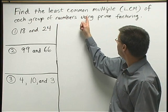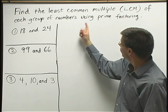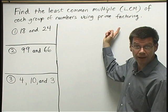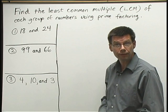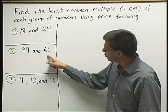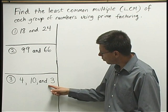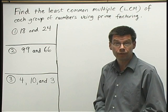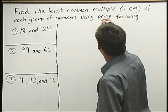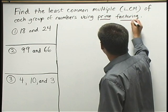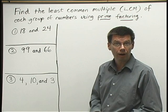Find the least common multiple, or LCM, of each group of numbers using prime factoring. Number 1 is 18 and 24. Number 2 is 99 and 66. Number 3 is 4, 10, and 3. This method of prime factoring involves writing each of the numbers as a product of primes.